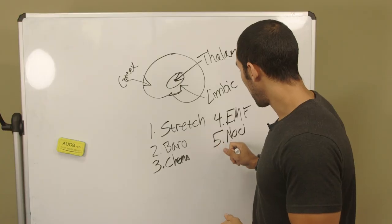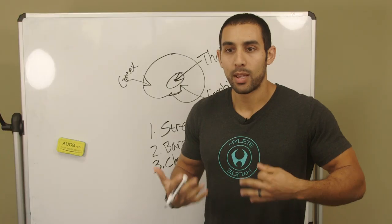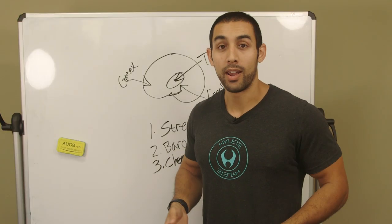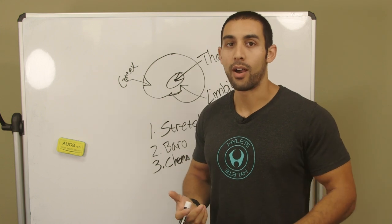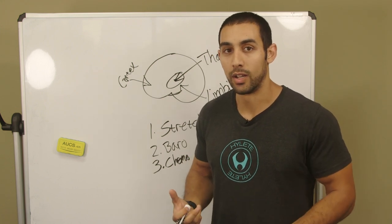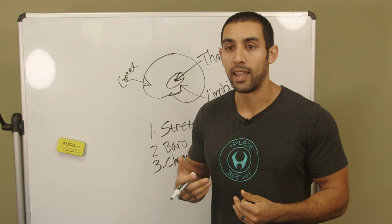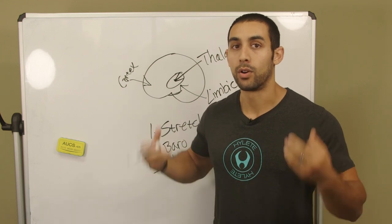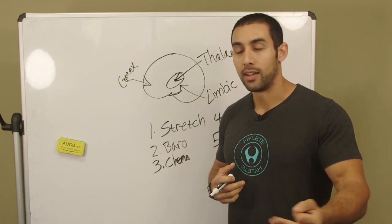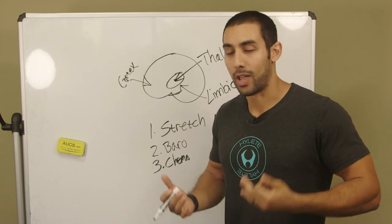And then you also have the one we're going to mainly talk about today, which are nociceptors. Nociceptors are threat receptors, so your brain is analyzing threats. When we're talking about nociception, nociception is happening all the time. It's happening right now if you're sitting watching this.